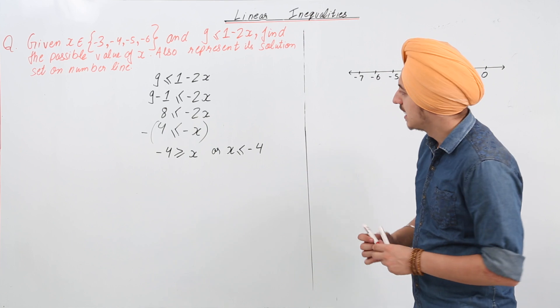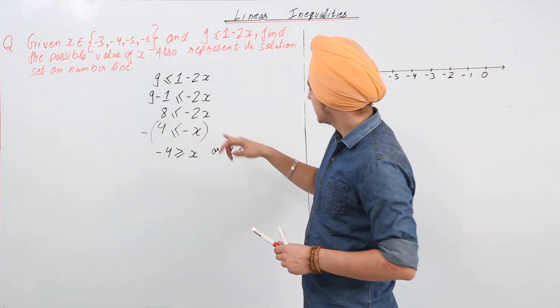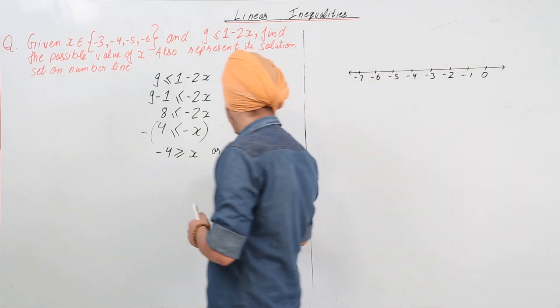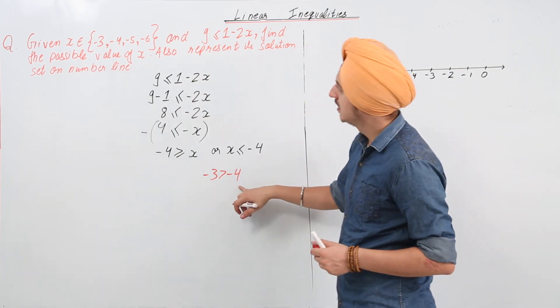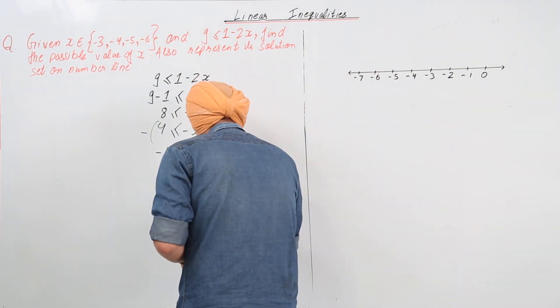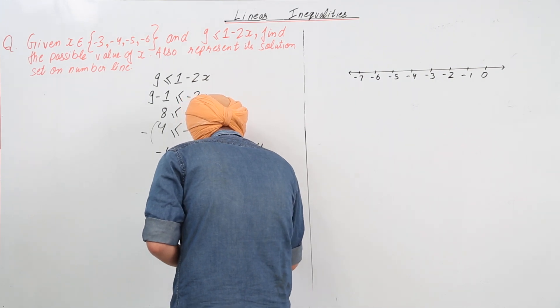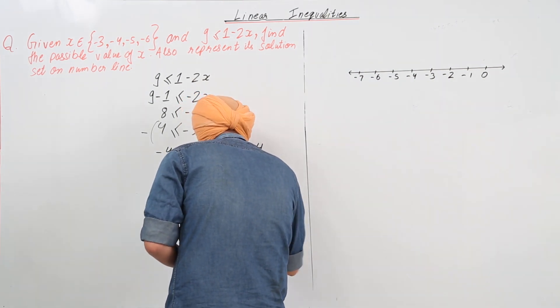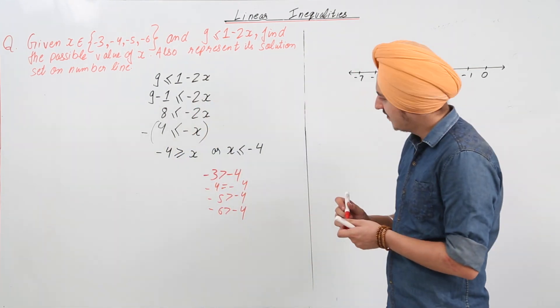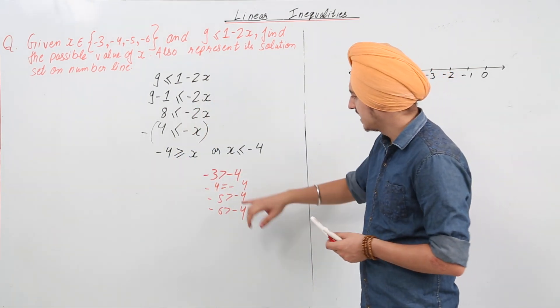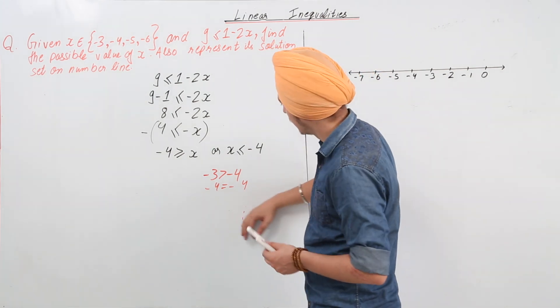What does that mean? From these four values, minus 3 is greater than minus 4, am I right? Minus 4 is equal to minus 4. We have minus 3 is greater than minus 4. We have minus 4 is equal to minus 4.